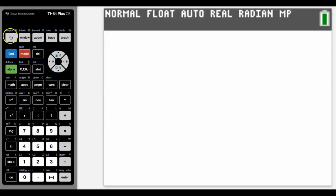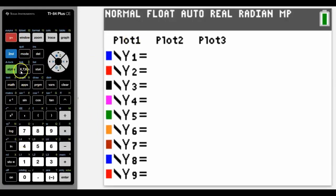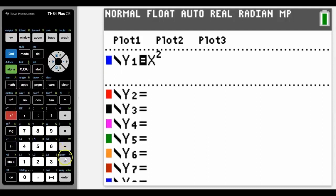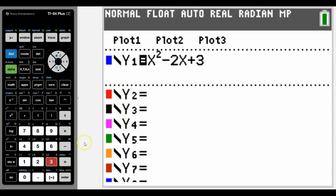To plot any graph, we need to go into y equals. We're going to do a quadratic. This is the quickest way to get the x, although you can use alpha x in green. It's much quicker just to use the button next to alpha. Let me just enter any quadratic, it doesn't really matter. Make sure we use minus, not the negative button, and then press graph.